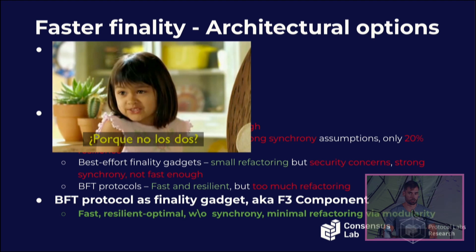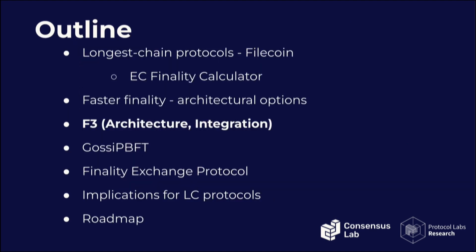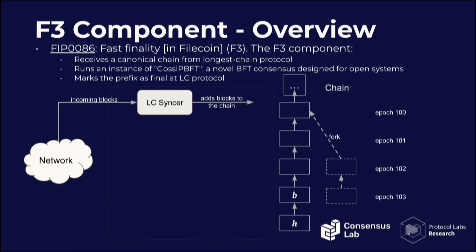The immediate idea: why not combine the last two? Provide a BFT protocol as a finality gadget — just an additional module. What we claim is we get fast finality, resilience-optimal security, no synchrony assumption needed, and minimal refactoring. We basically follow the path of least resistance because we barely touch the main code — we just add a new module. This is what we call F3: Fast Finality in Filecoin, but it's completely modular and can be applied to any longest chain protocol.